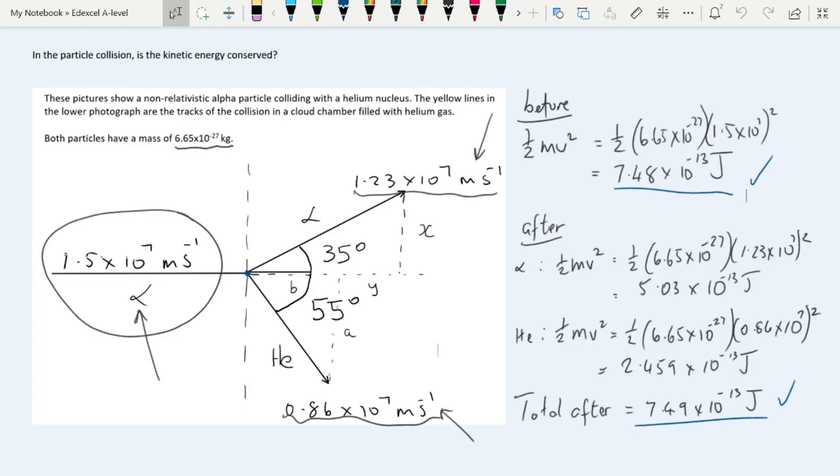One point to note is, and examiners often comment on this, a lot of students will write down the square when they're showing their working in their calculation, and then forget to square it when it comes to using their calculator. So make sure that you double check that you've squared everything, especially if you have a collision like this which involves particles, and you don't get the kinetic energy being the same before and after. Think to yourself, let me just double check that I've done all my squaring.